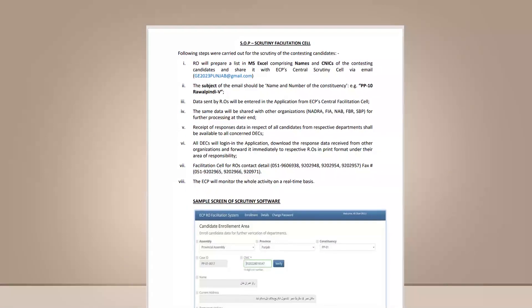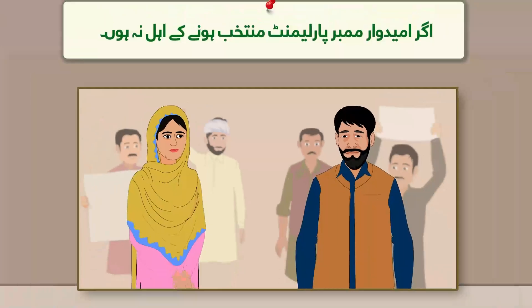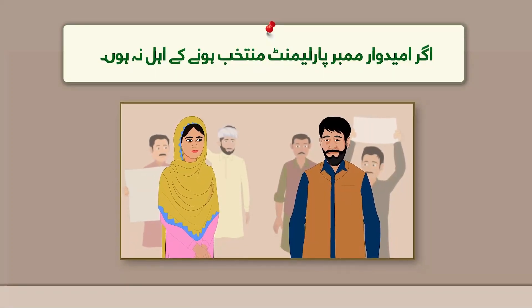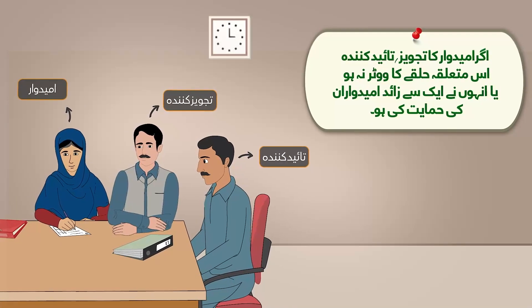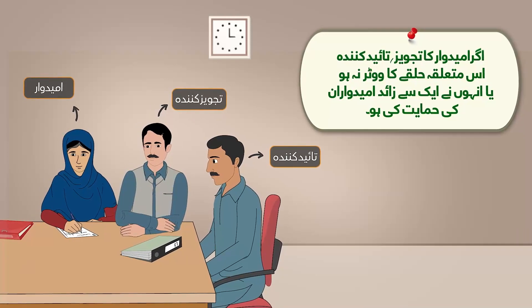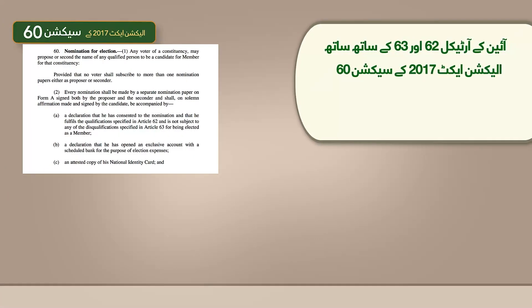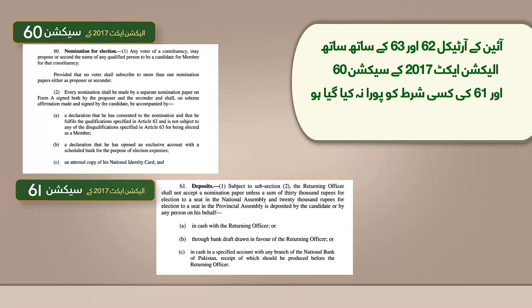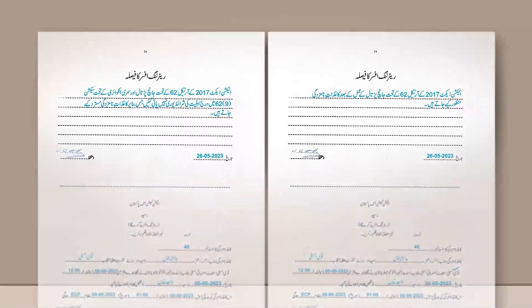In addition to conventional scrutiny methods, with the use of technology the ROs will also be able to conduct online scrutiny. Nomination papers can be rejected only in the following situations: if the candidate is not eligible to be elected as a member of Parliament; if the proposer or seconder is not registered as a voter in the same constituency, or has supported more than one candidate; if any condition of Article 62 and 63 of the Constitution or Section 60 and 61 of the Election Act 2017 has not been fulfilled; if the candidate has provided incorrect information; or if the signature of the candidate, proposer, or seconder is forged.